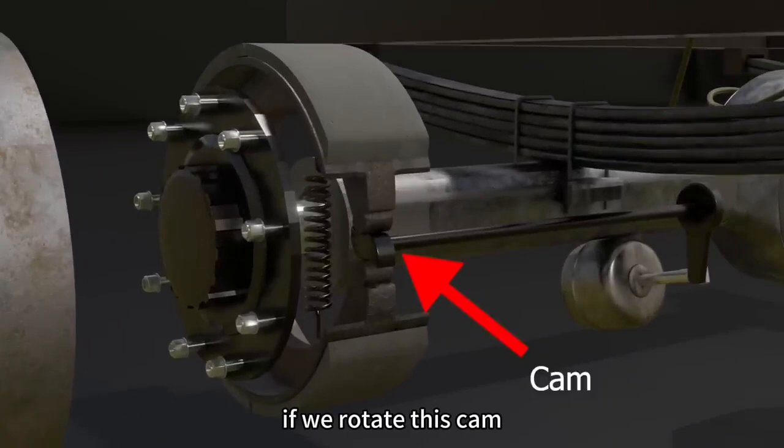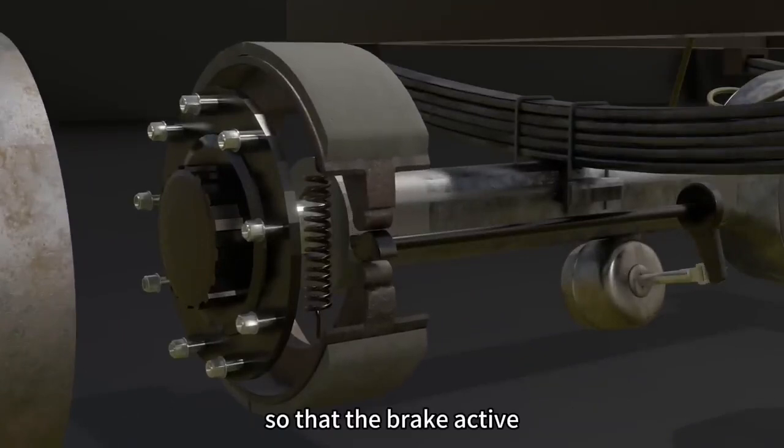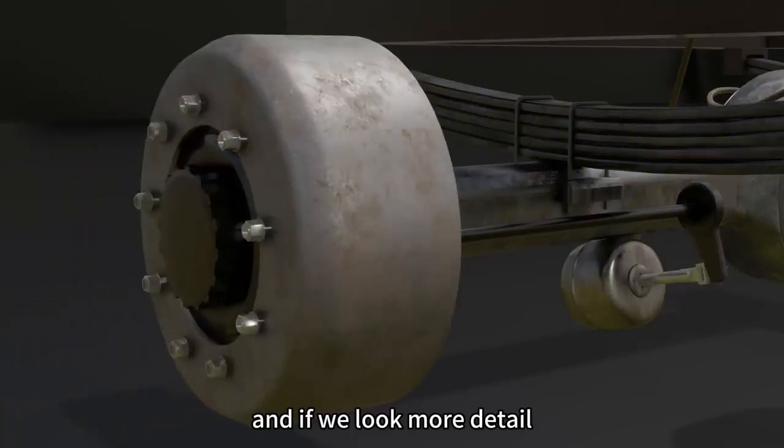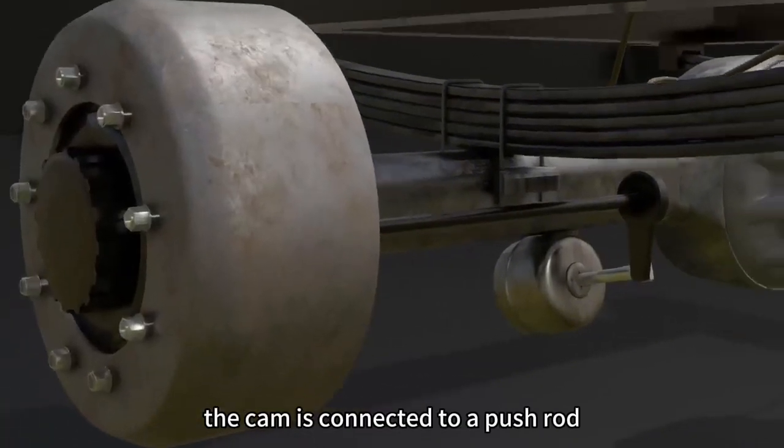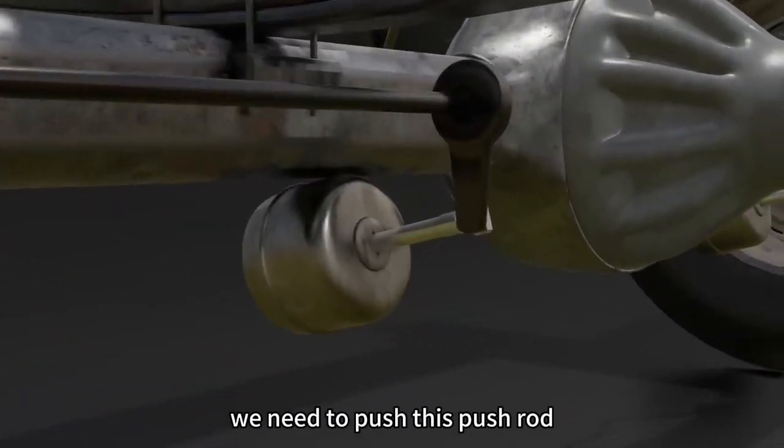If we rotate this cam, it will push both brake shoes to the outside, so that the brake is active. And if we look more in detail, the cam is connected to a pushrod. To activate the drum brakes, we need to push this pushrod.